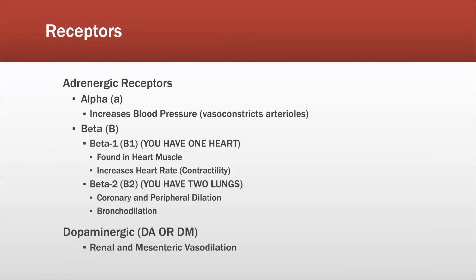Alpha receptors increase blood pressure by vasoconstricting vessels and arterioles. For beta receptors, a simple memory tip: you have one heart and two lungs. Beta-1 receptors are found in the heart muscle; when activated, they increase heart rate and contractility. Beta-2 receptors — two lungs — are responsible for coronary and peripheral dilation and bronchodilation. The dopaminergic (DA/DM) receptors are responsible for renal and mesenteric vasodilation.